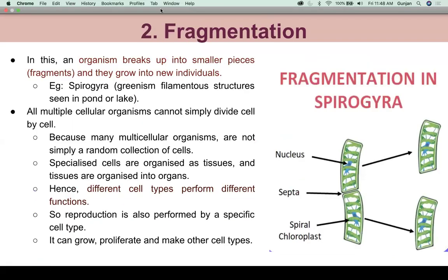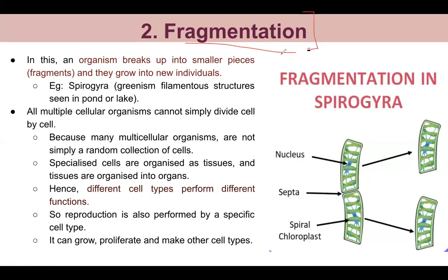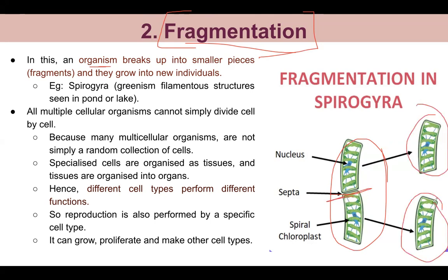The second type of asexual reproduction is fragmentation. Fragmentation means any organism breaks itself into small pieces — fragments. Each fragment then forms a complete organism on its own. This is seen in Spirogyra, which is a greenish filamentous structure found in ponds and lakes. The organism breaks into fragments, and after division each fragment develops into a complete organism.